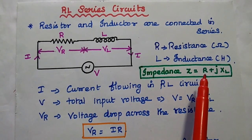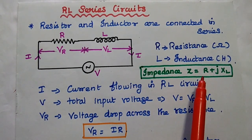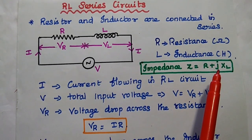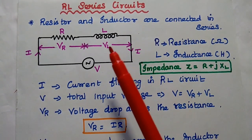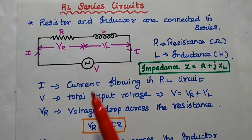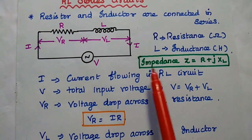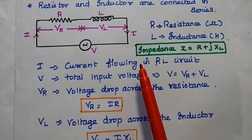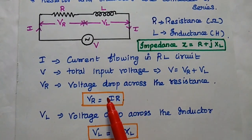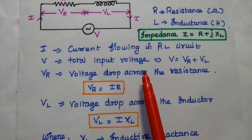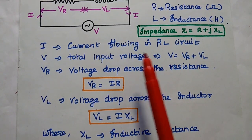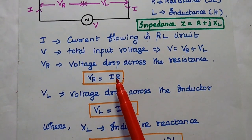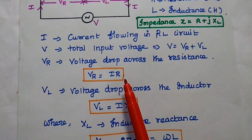R is the real part which denotes the resistance value. XL is an imaginary value — the inductive reactance of the inductor. Impedance is very important. Here I is the current flowing in the RL circuit. The current is the same but the voltage is divided between the elements.